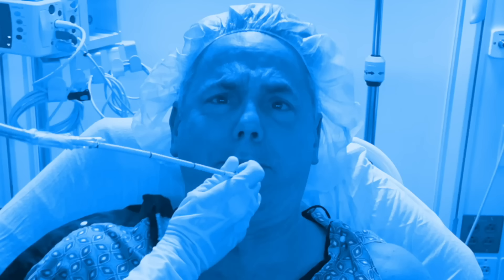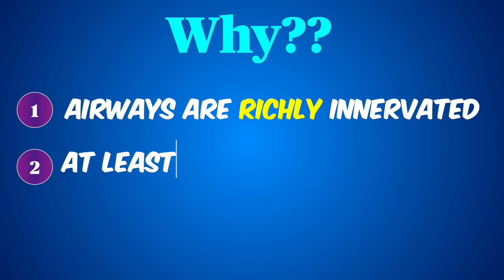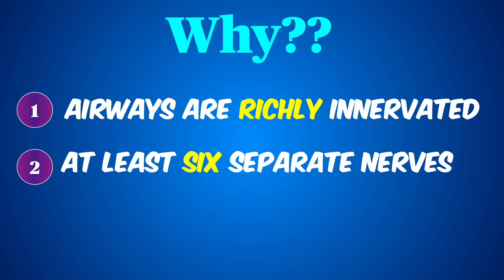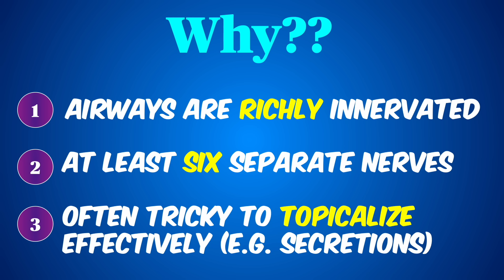Why is it so hard sometimes? Well, for starters, the airway is richly innervated and inherently hard to anesthetize. You also need to block at least six nerves to get complete airway anesthesia, which can be technically challenging. And finally, putting local anesthetics directly on the airway mucosa sounds good, but it's often flawed in practice, especially when the patient has secretions that block the absorption.